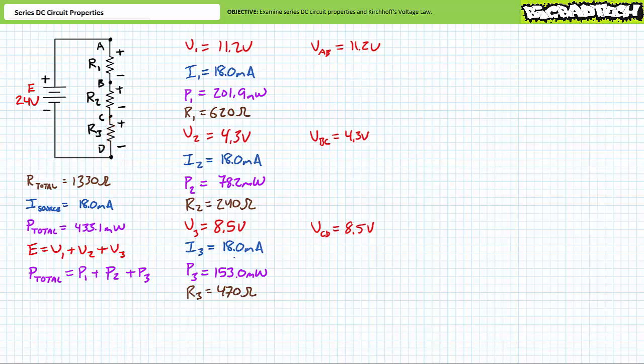Using double subscript notation, we can call the voltage drop across resistor 1 VAB, the voltage drop across resistor 2 VBC, and the voltage drop across resistor 3 VCD. Voltage is a two-point measurement, and double subscript notation makes it obvious which two nodes we're talking about. KVL states that for any closed loop, the summation of voltage rises equals the summation of voltage drops. What goes up must come down. Let's explore the KVL equation for this circuit in a slow and deliberate manner.